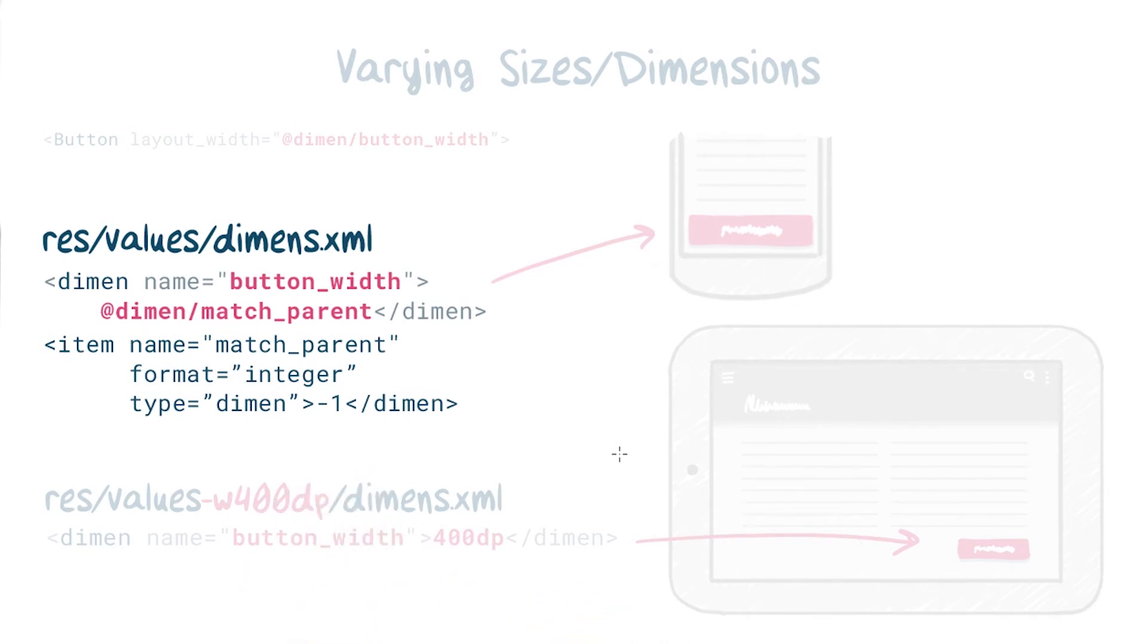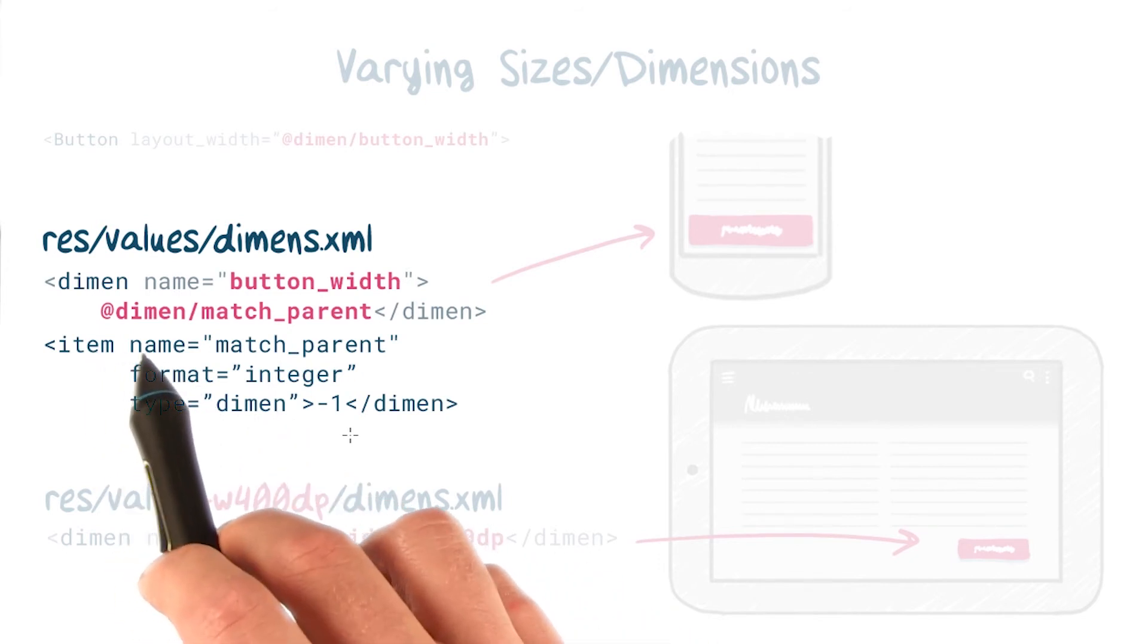Here's a quick trick that works around that limitation. Just put this item tag in your dimensions file, that's equivalent to the integer value negative one. Then you can reference it in other dimension values, like so, using @dimen/match_parent.